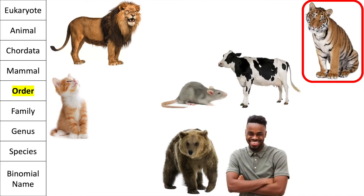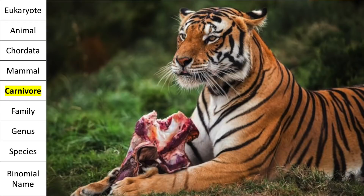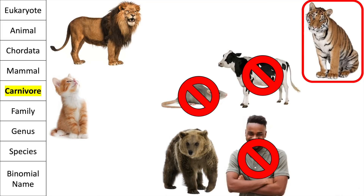So which order does the tiger belong to? Well, the tiger is a carnivore, which means it eats meat as its main source in its diet. So the human, the rat, and the cow are not carnivores, so we can get rid of them. The remaining animals all belong to the same order — they're all carnivores.